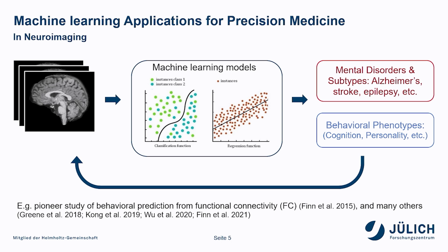Since this year the DIC symposium focused on AI and machine learning, let's first have a look at how machine learning can be applied in the neuroscience field. On the one hand, machine learning models can be built to classify patients with mental disorders from a healthy population based on data collected from the brain such as neuroimaging. On the other hand, we can also use machine learning models to predict large-scale behavioral phenotypes from neuroimaging data.